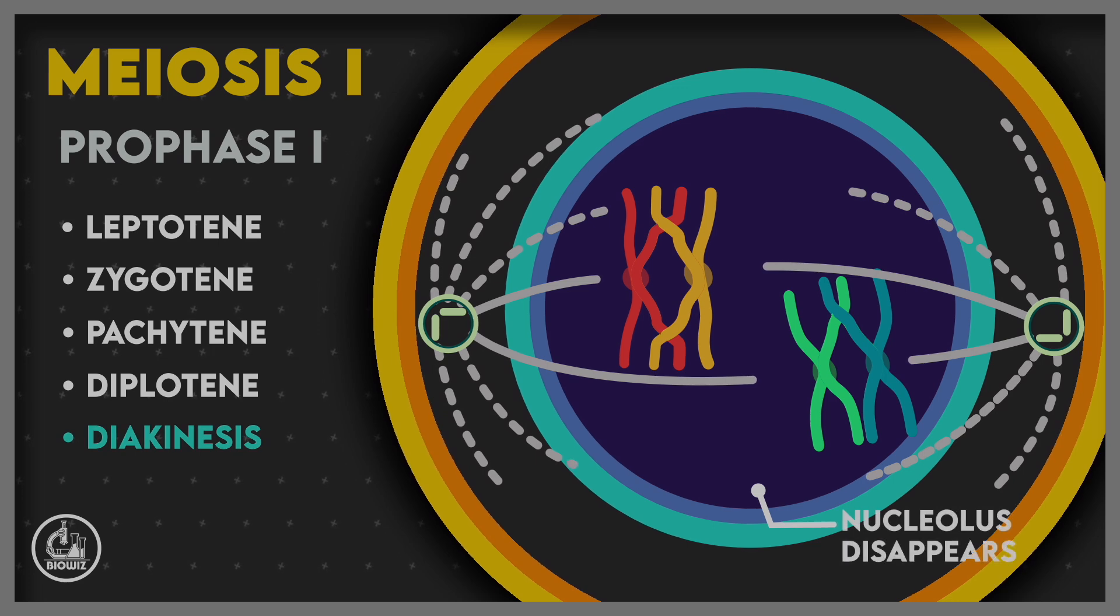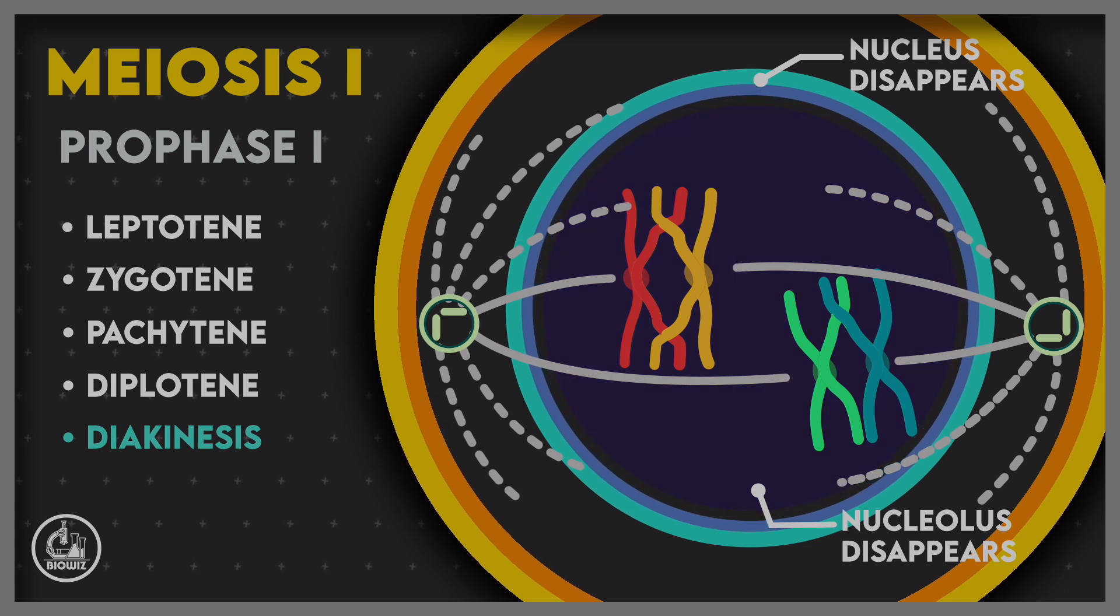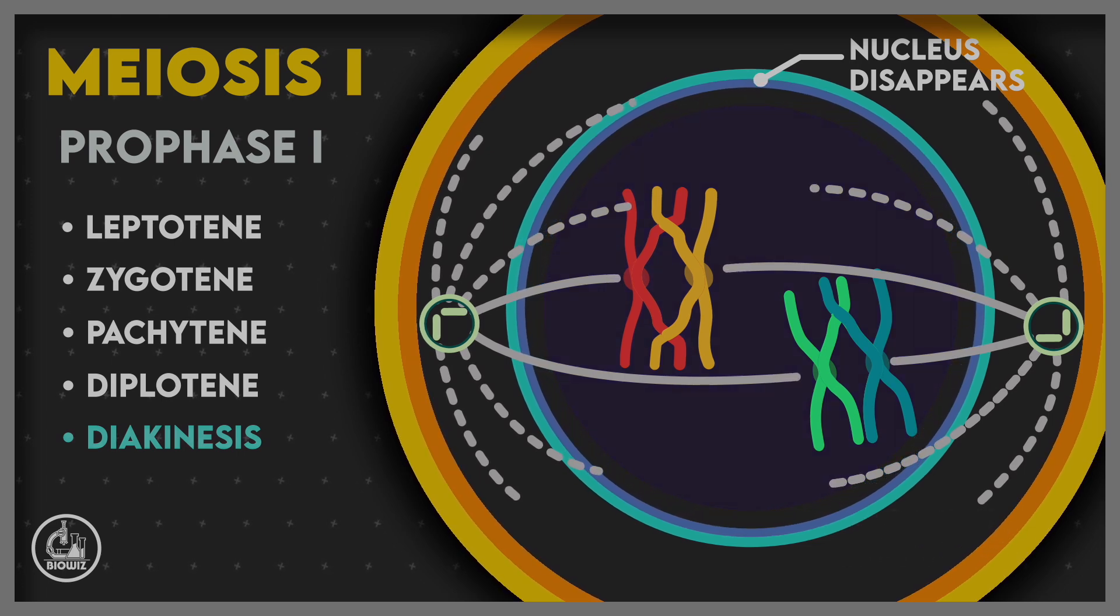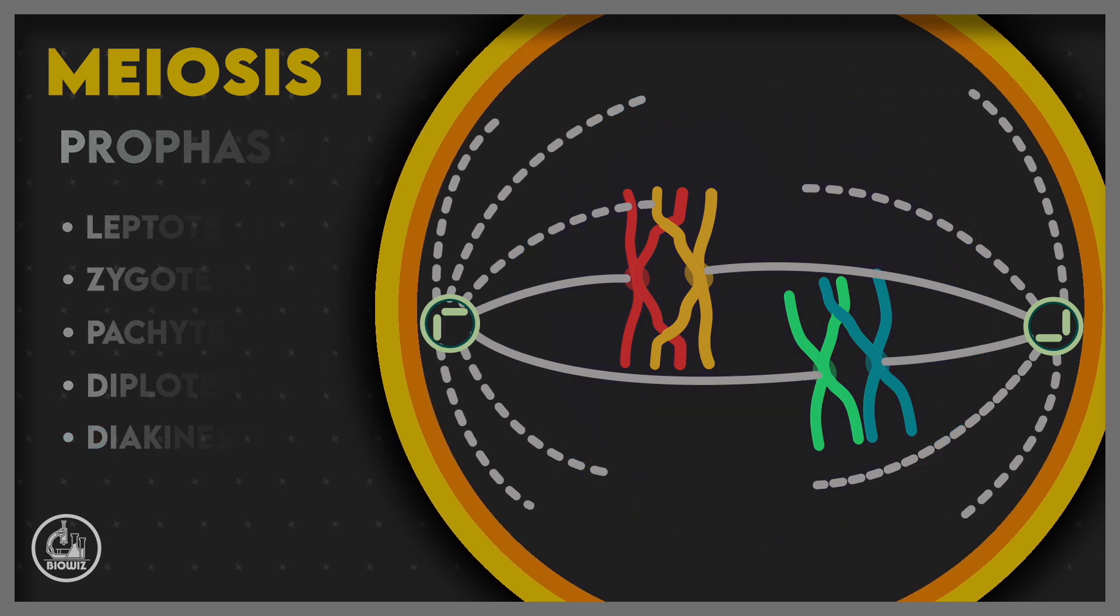The last substage is diakinesis, which is marked by terminalization of chiasmata, disappearance of nucleolus, and complete disintegration of the nuclear envelope. As a result, the bivalents are released into the cytoplasm.